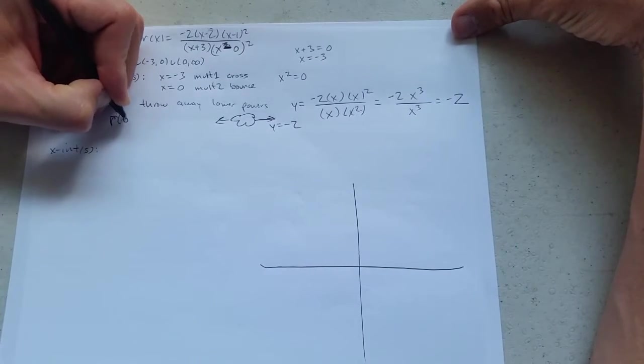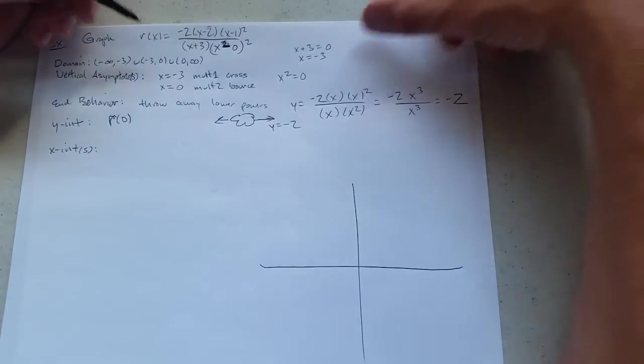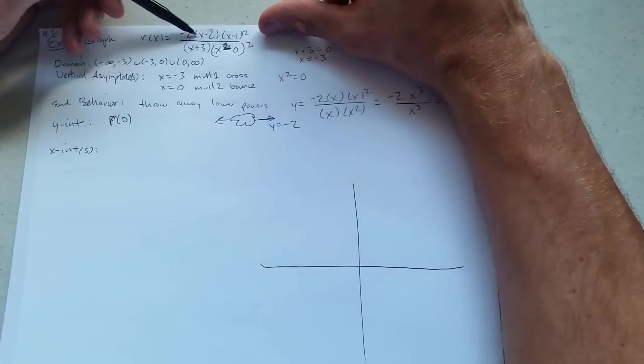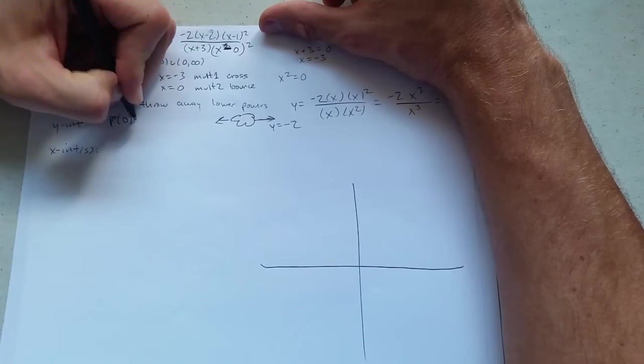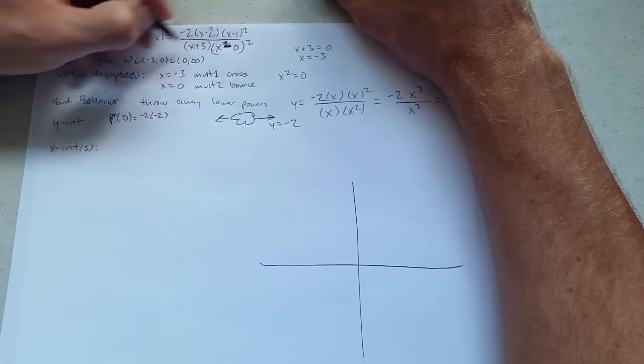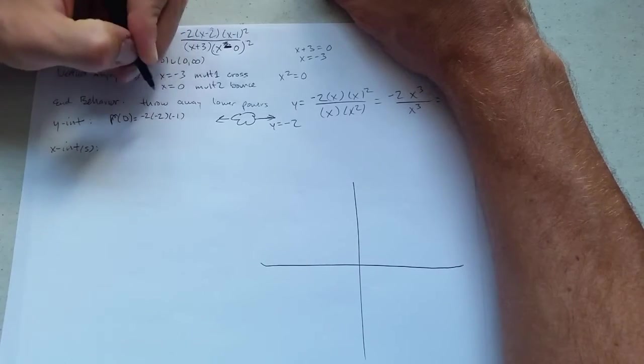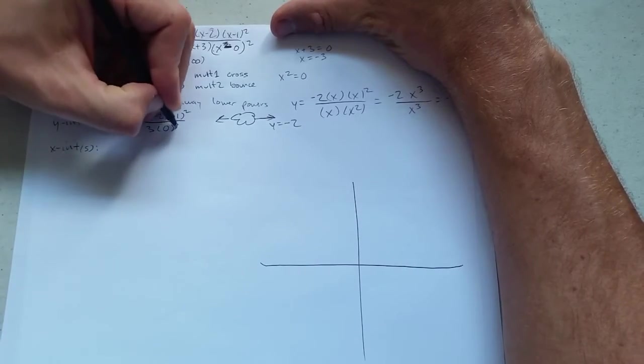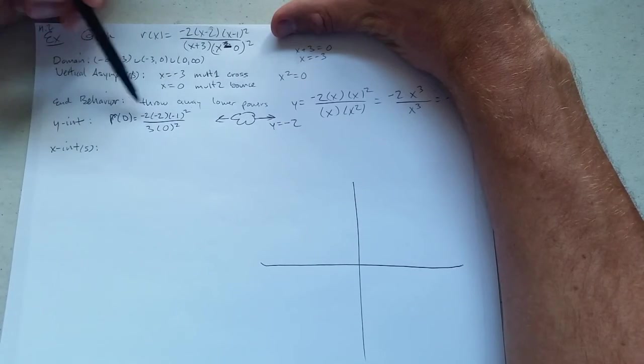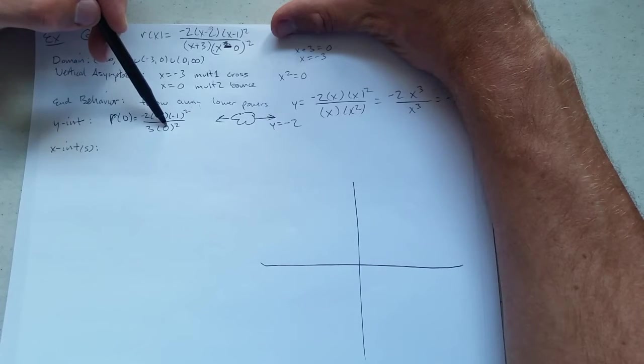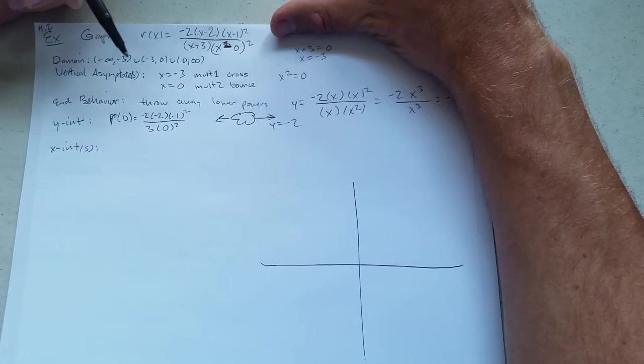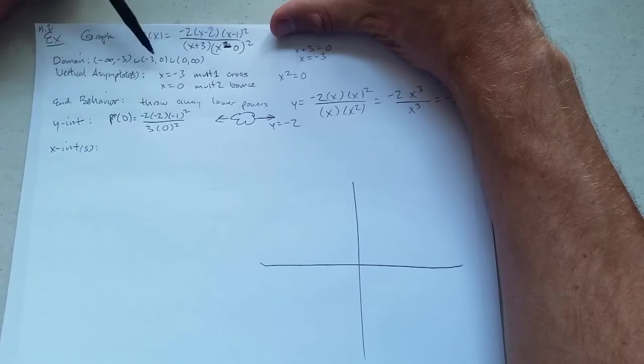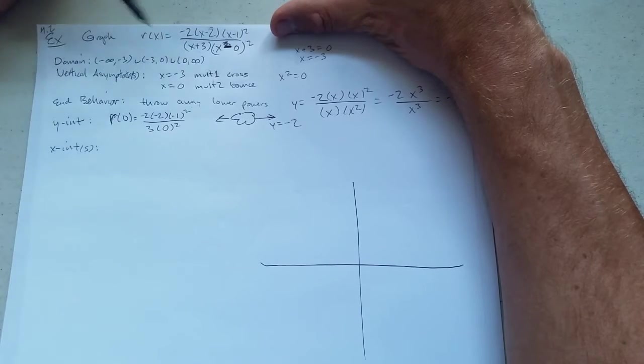We want to plug in 0, r of 0. A great reason to not write r of x here, because this is not r of x, and it would mess us up down here if I plug in 0. I have to carefully plug in 0 for x here. So I get negative 2 times 0 minus 2 is negative 2. 0 minus 1 is negative 1 squared. 3 times x, 0 is 0 squared. Now I could simplify all this. I also will find out that I'm divided by 0. So what does that mean? There's no y-intercept. This is undefined.